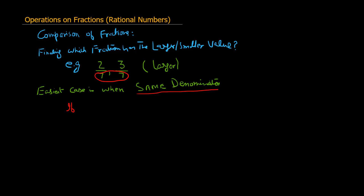So 3/7 is the larger fraction because the numerator is 3. When the denominator is the same, the fraction with the larger numerator has the larger value. Now let's take another example where the denominators are not the same.